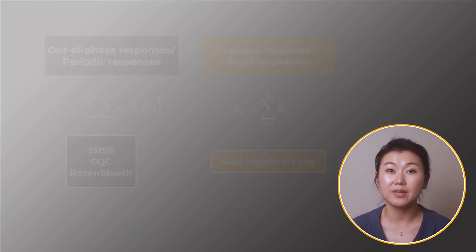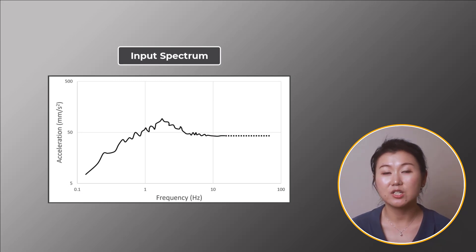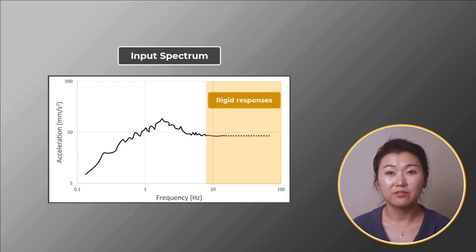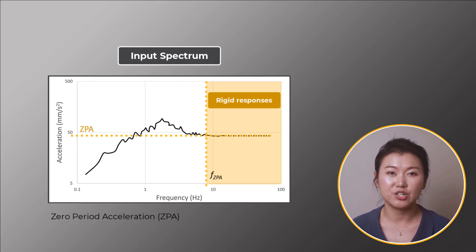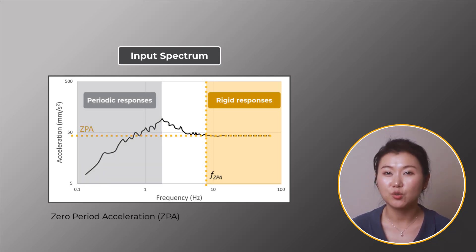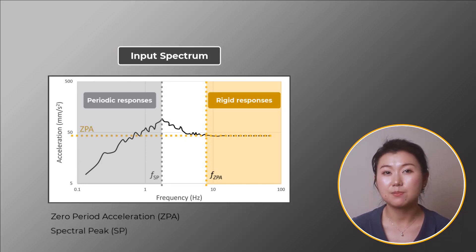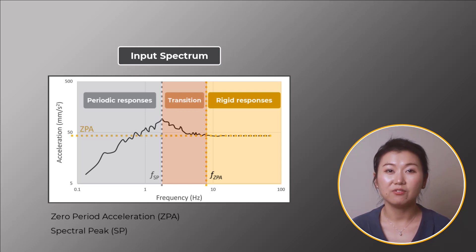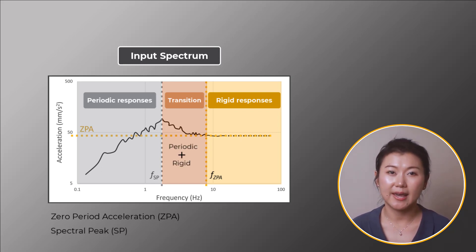This is best addressed by looking at an input spectrum, where we generally separate the response into three regions. The rigid response region is the high frequency plateau range of the curve. We define the frequency at this point as fzpa and the spectral value at this point as ZPA, or zero period acceleration. The periodic region is located in the low-frequency region, and the end of the periodic region is characterized by the peak of the input spectrum. We call the frequency at peak response fsp, where sp stands for spectral peak. The in-between region is the transition area from periodic to rigid response, and modes between fsp and fzpa may be thought to have both periodic and rigid components.